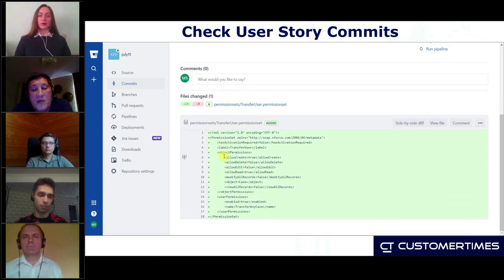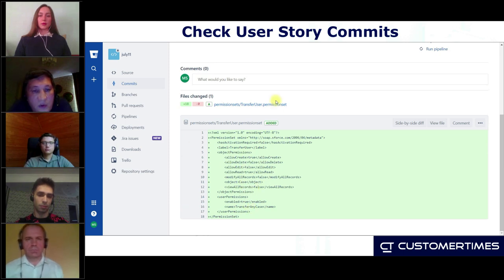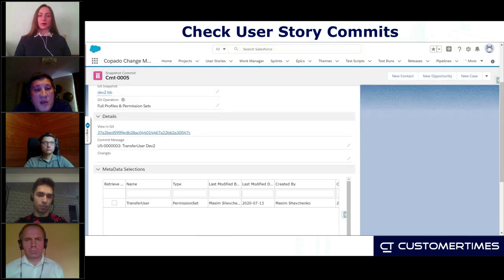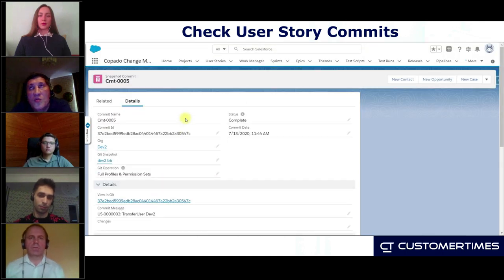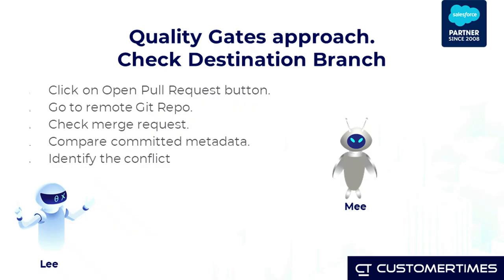We can see this record here — yes, it was Transfer User in this commit. And immediately we can see what has actually been committed in our Git repository. Copado can use different repositories like GitHub, GitLab, and Bitbucket. In this case I am going to use Bitbucket. Here we can see that it was a Transfer Any Case User permission with the permission to create and edit case objects.